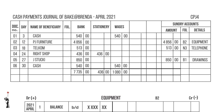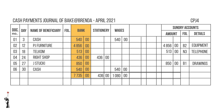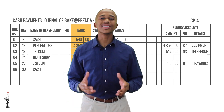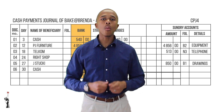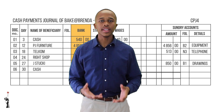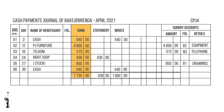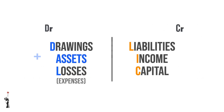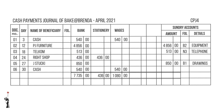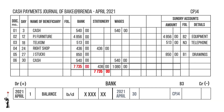Next is bank. When it comes to the cash payments journal, the business spends money — money leaves the business — which means that bank decreases. Bank is an asset, and according to our DALEK acronym, bank increases on the debit side and decreases on the credit side. Bank is therefore credited, and we post the words 'total payments' as the explanation.